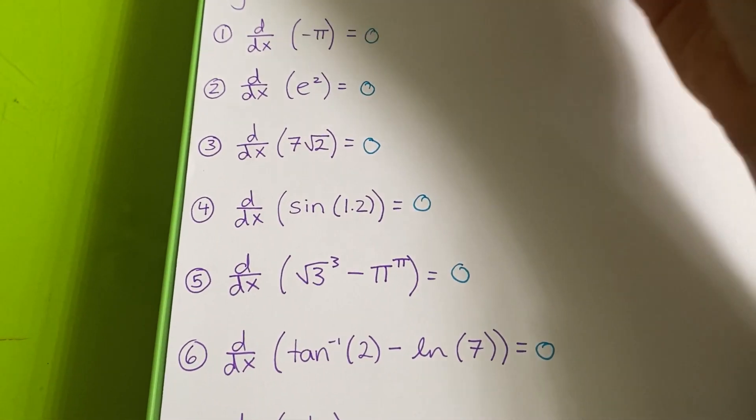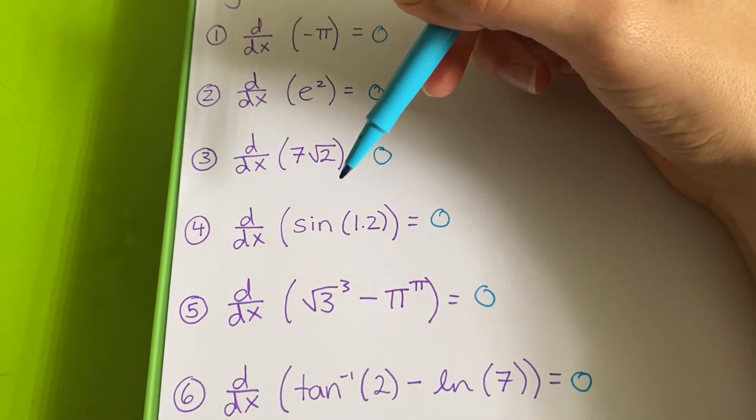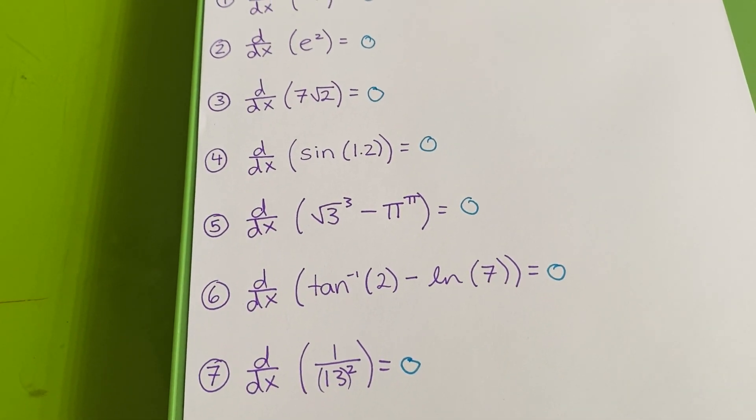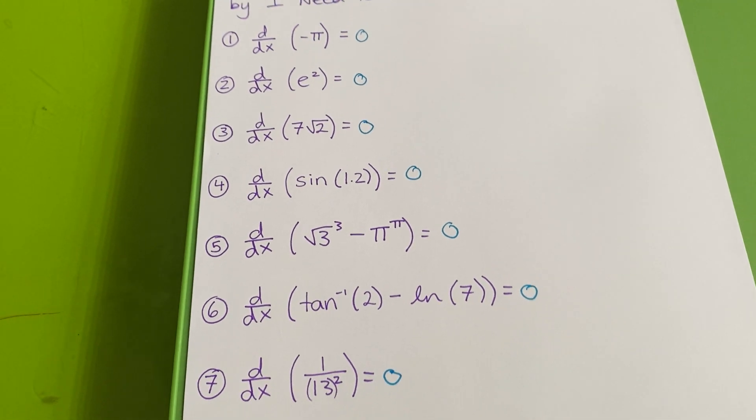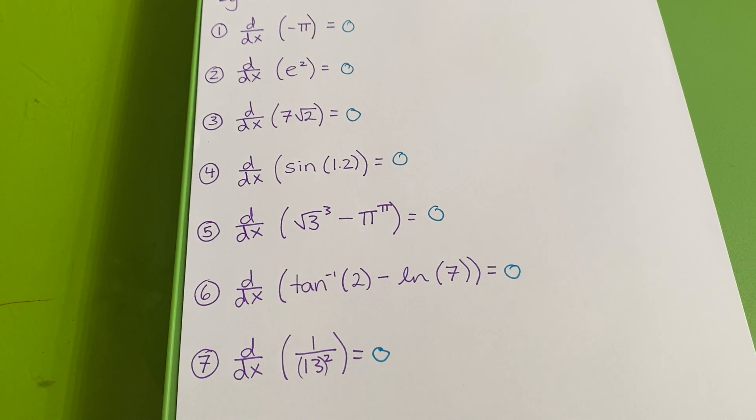it's easy to get a little confused and accidentally start doing power rule or different trig rules when really just make sure to look for where your variable is in the function to decide how to approach the derivative.